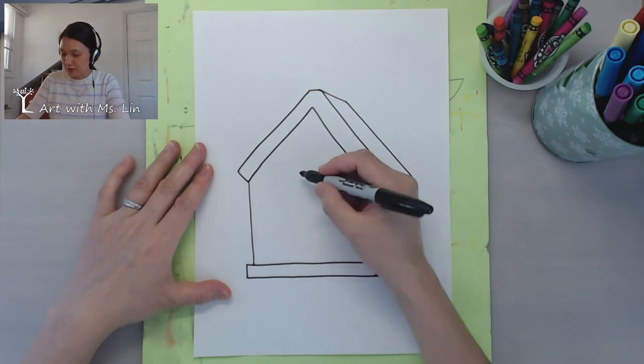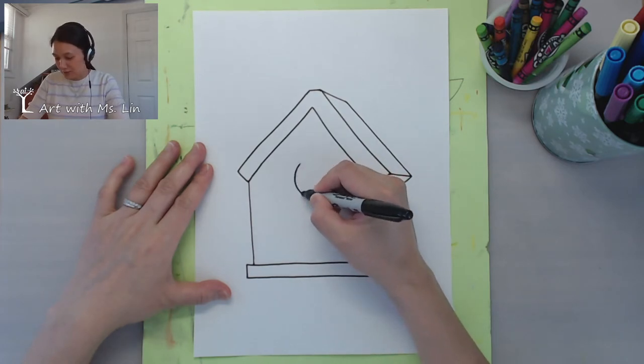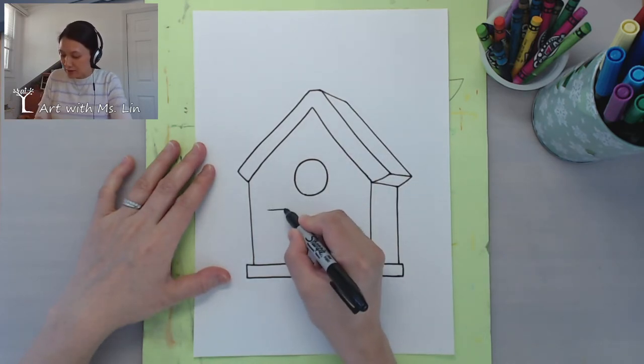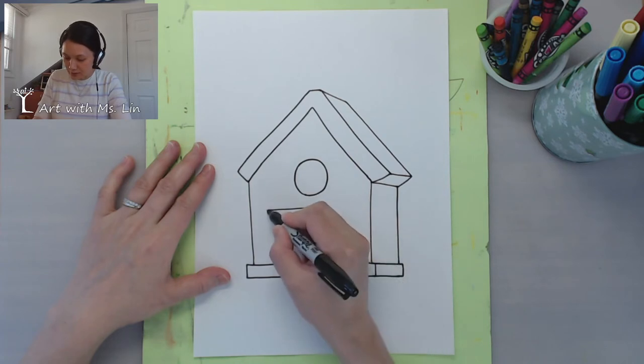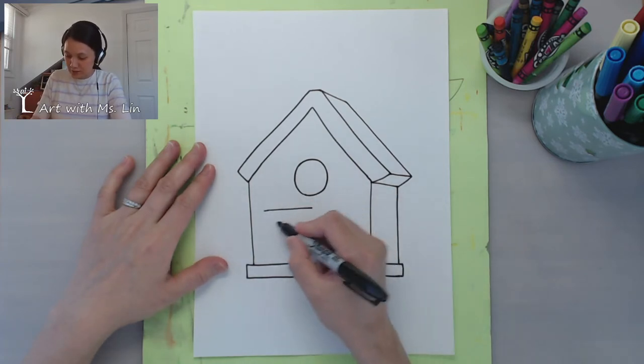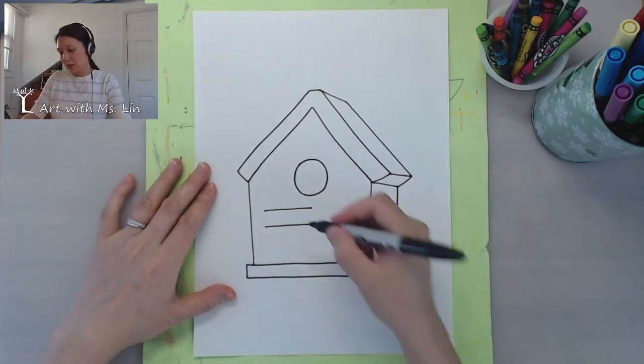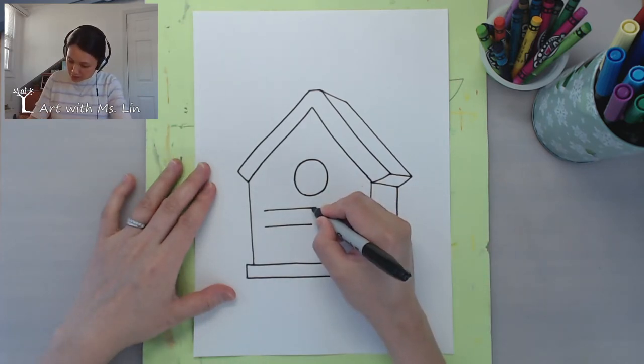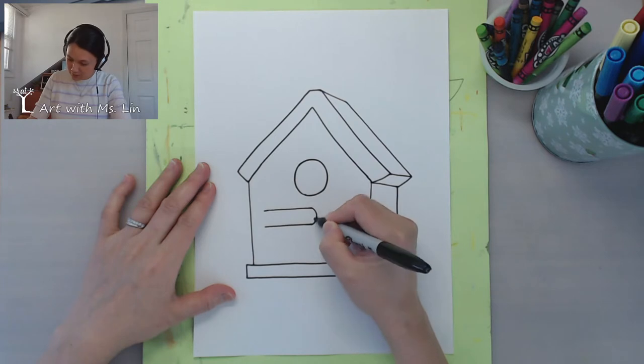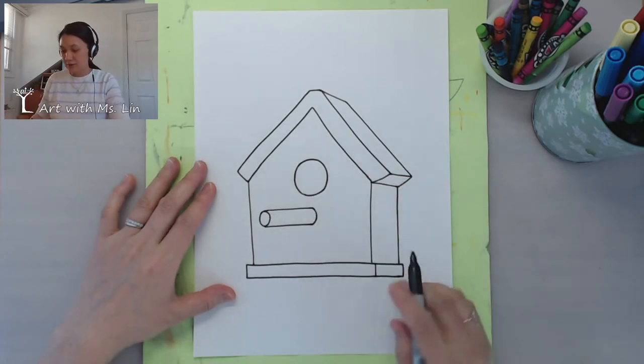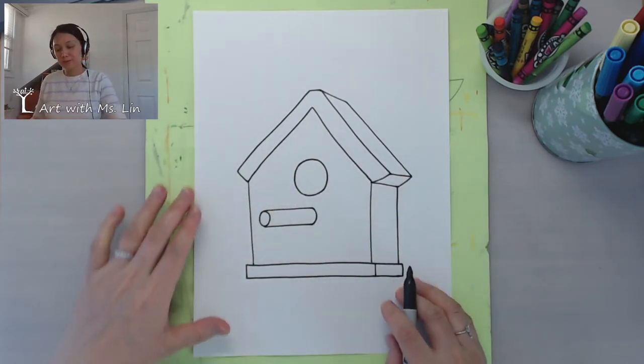Now what we need is a hole, right? So the bird can go in and sometimes they have a stick where they land. You can stand on it. So just draw a cylinder which is round shape like this. This part is curved and then the circle on this side. So then that's where they will be standing.